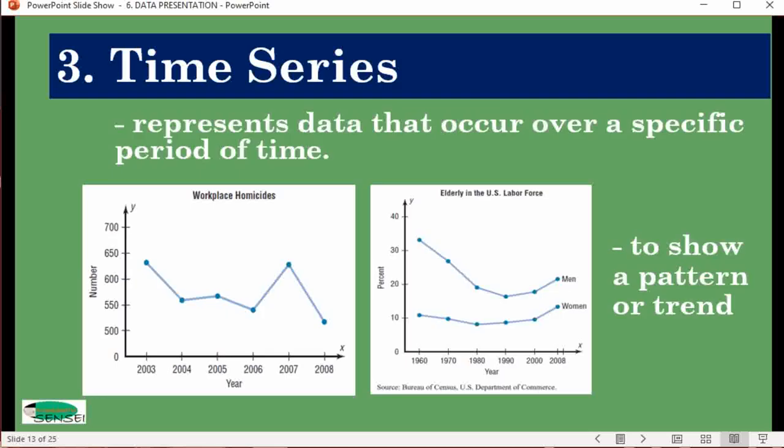We also have time series. In time series, we use frequencies and connect the dots. This is when we would like to show a pattern or trend—is it increasing, is it decreasing? You may also compare two categories, men and women for instance, depending on the year. Time series is the best option if you would like to show trend or pattern for a specific period of time.